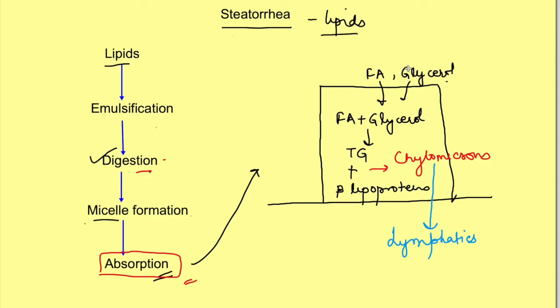For absorption we want that the products of digestion should enter the cell, there should be re-esterification that is the formation of triglycerides, then they should combine with the beta lipoproteins to form chylomicrons which should enter into the lymphatics. Any problem here entering, then combination with the beta lipoproteins, and entering into the lymphatics can lead to the malabsorption of the lipids.